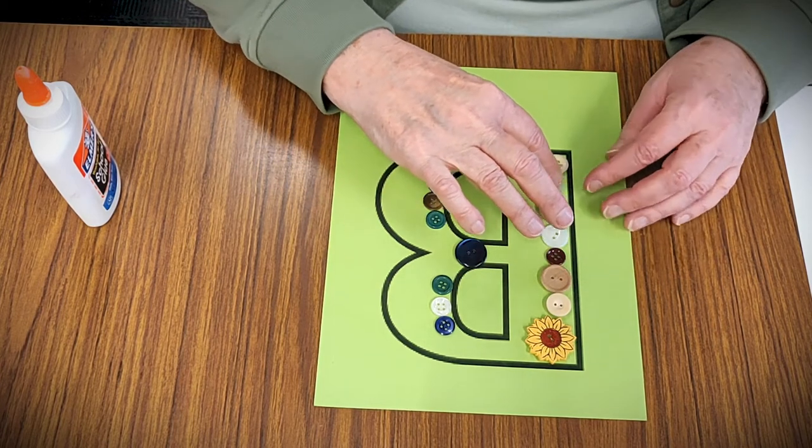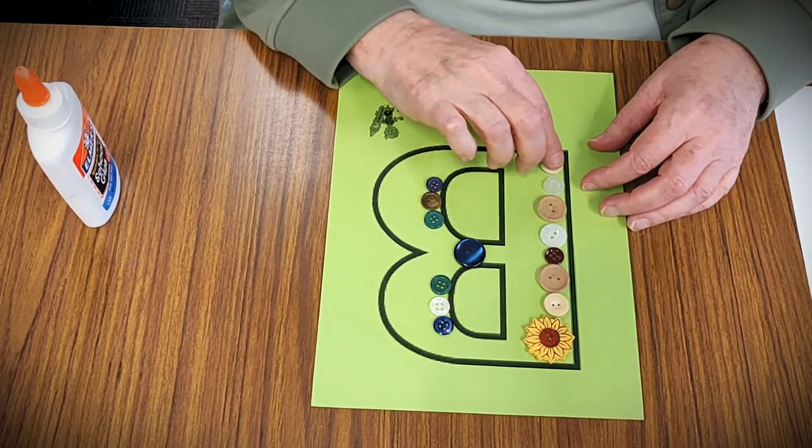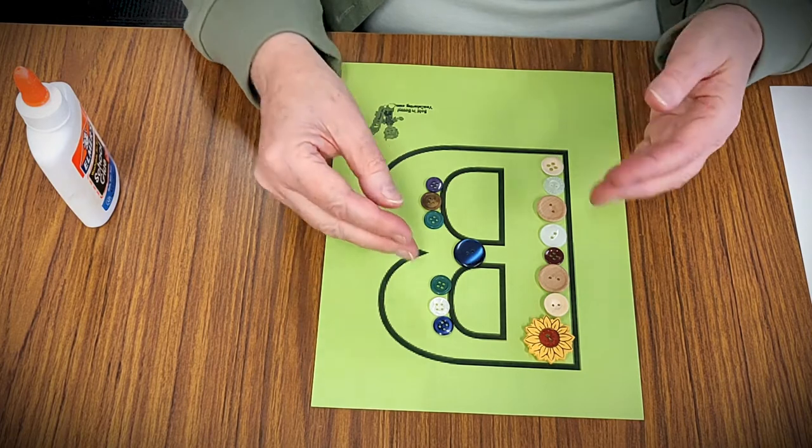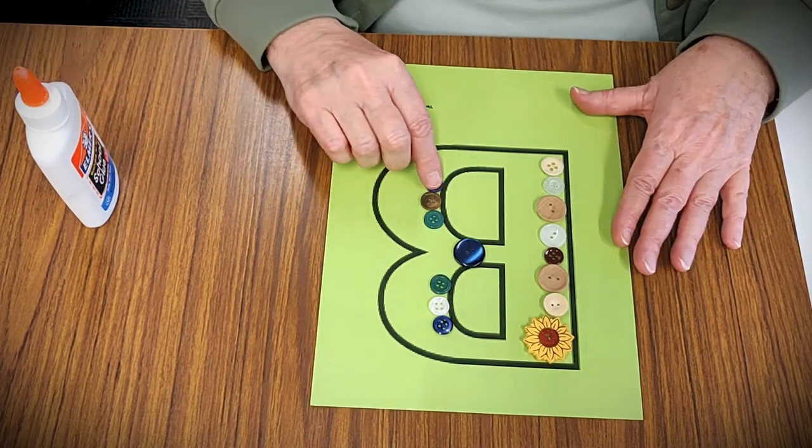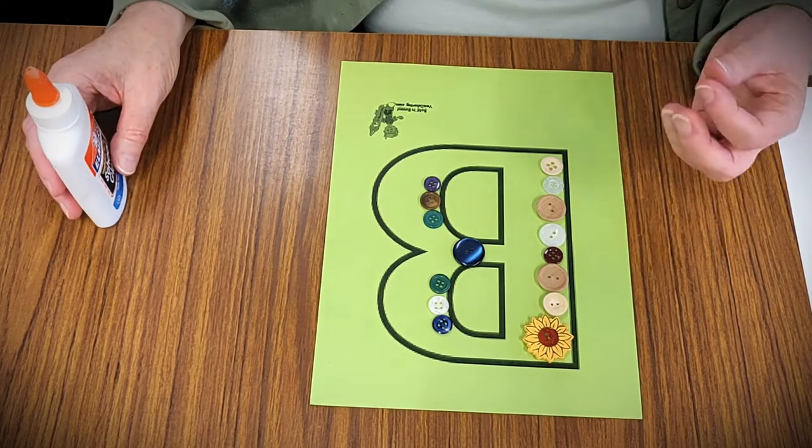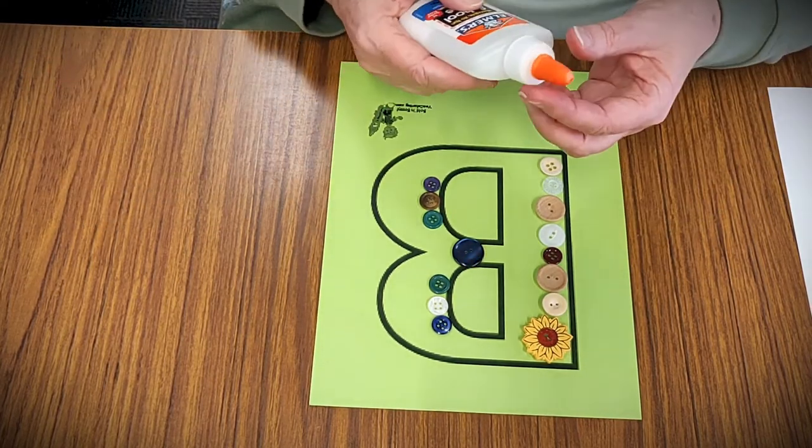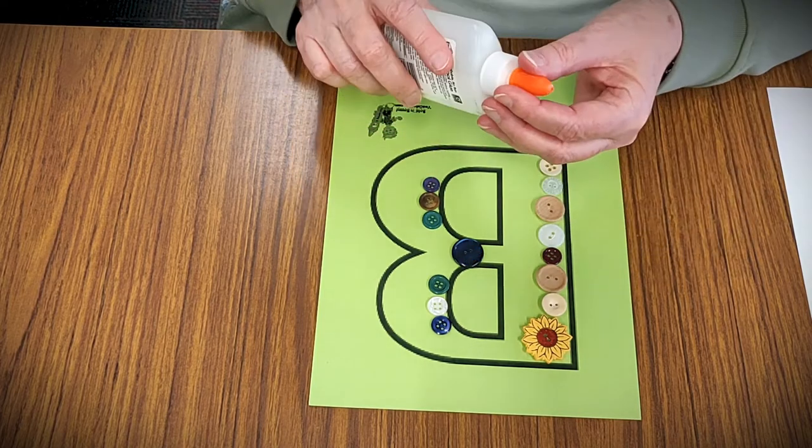Okay, I think that will work. Like I said, do a design, if you don't like it change it before you start gluing. Once you have the design in place that you like, then you're going to pick up each button at a time and put some glue on the bottom of it and then put it in place.